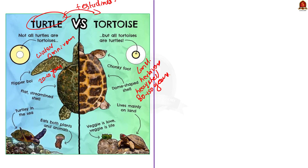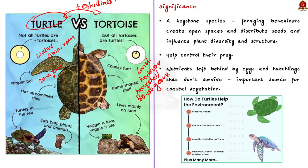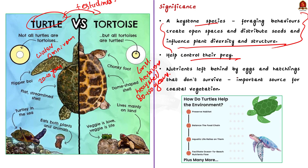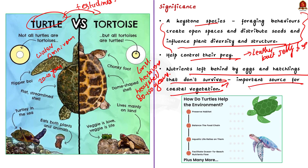Let us look at the significance of tortoises and turtles. Tortoises are considered a keystone species in some ecosystems — their foraging behavior, including grazing on vegetation and digging burrows, can have a major impact on habitat. They create open spaces, distribute seeds, and influence plant diversity and structure. Turtles help control their prey; for example, leatherback turtles help manage the amount of jellyfish in the ocean, and hawksbill turtles help the reef by eating sponges that compete with reefs for space. Additionally, the nutrients left behind by eggs and hatchlings that don't survive provide an important source of nutrients for coastal vegetation.